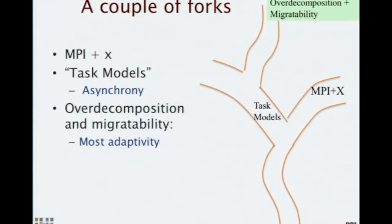What people mean by task models is asynchronous models. Asynchronous models where there are DAGs involved are useful — that's a term we should take or at least add to our repertoire. But in addition, we need to add, in my opinion, over-decomposition and migratability as additional things before we can get the full benefits of adaptivity. That's what CHAM++ has been doing.